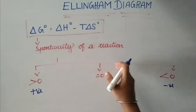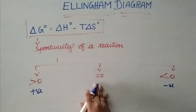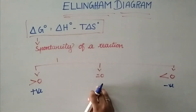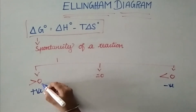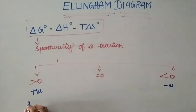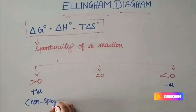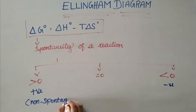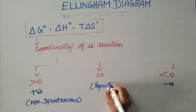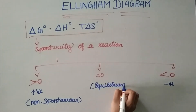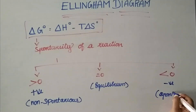δG⁰ represents the spontaneity of a reaction. There are three conditions: if δG⁰ is greater than 0, it is positive — that is a non-spontaneous reaction. If δG⁰ equals 0, the reaction is at equilibrium. If δG⁰ is less than 0, it is negative — the reaction is spontaneous.